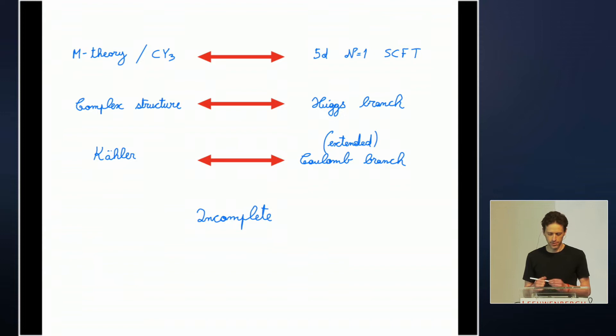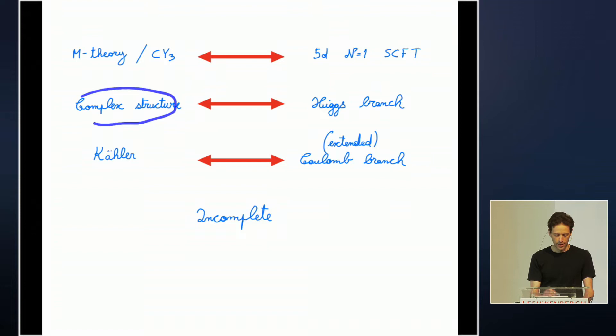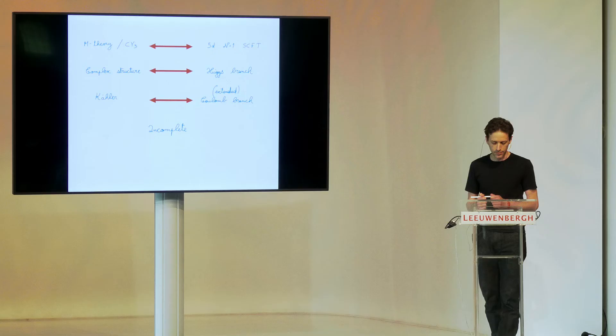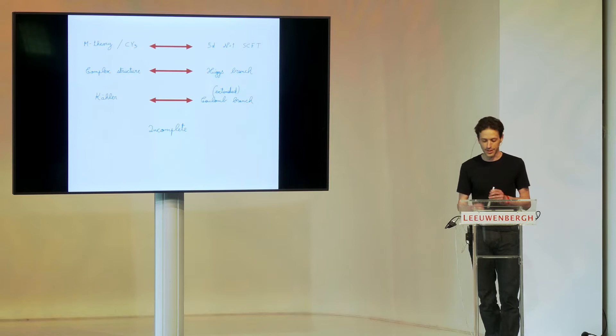The idea is trying to understand five-dimensional N equals one SCFTs from the paradigm of M-theory on non-compact singular Calabi-Yau threefolds. This is a very old idea going back to the 90s. We have a pretty decent dictionary about geometric data and how it translates into gauge theory data. For instance, deformations roughly correspond to Higgs branch directions, while Kähler resolutions — small or large — correspond to either Coulomb branch or extended Coulomb branch directions. It's a very nice dictionary, but as I will show, it's incomplete, and we've known for more than a decade that it's incomplete. That's actually a very interesting opportunity to discover new phenomena.